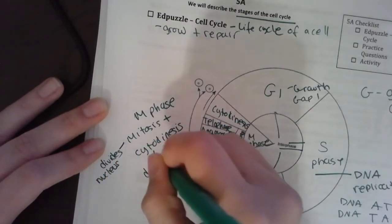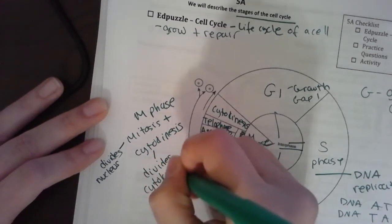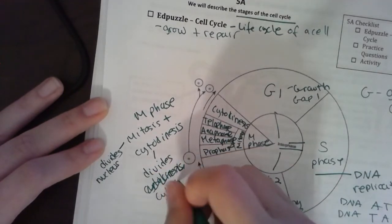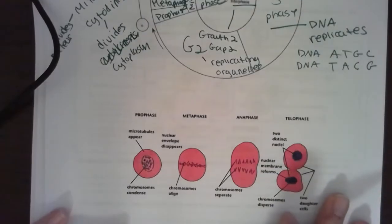Cytokinesis divides the cytoplasm, which is that slimy stuff that all the organelles sit in. Cytokinesis divides the cytoplasm. Okay, let's look down here.